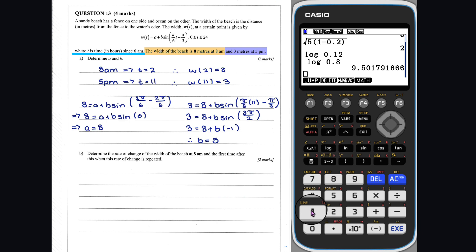Question 13 Part B: From Part A, we have that A equals 8 and B equals 5. Thus, which we can write as A equals 9pi over 6. We now need to determine the rate of change of the width of the beach at 8am. Whenever we see a rate of change, we need to think about derivative. Thus, we need to find the derivative of W at 8am. 8am is equivalent to T equals 2.